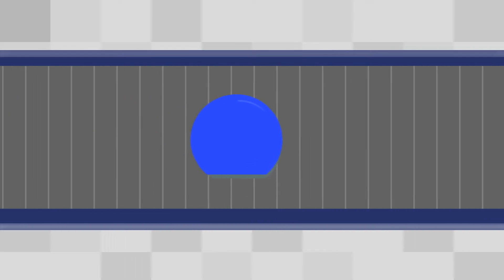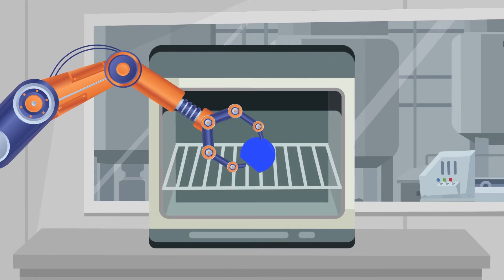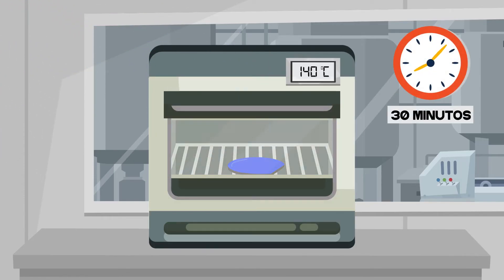The first step involves establishing optimal conditions on the wafer surface before applying the photoresist. To do that, we clean the wafer and place it in an oven to bake at a high temperature to dry it.